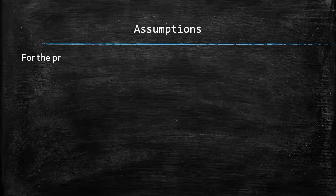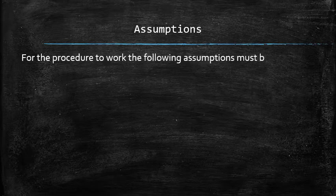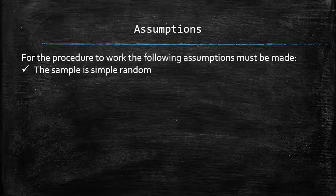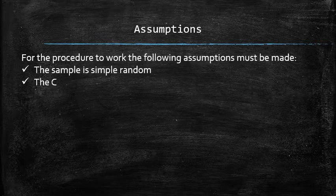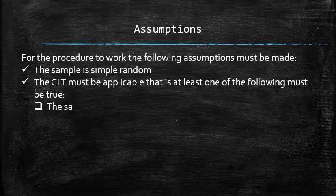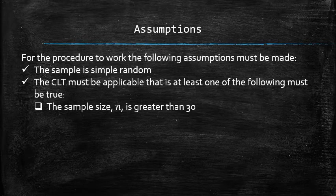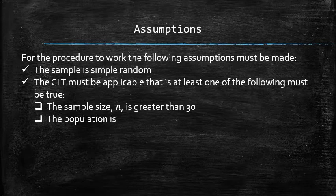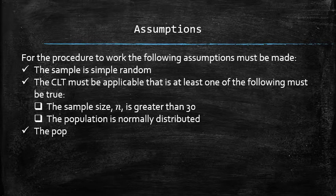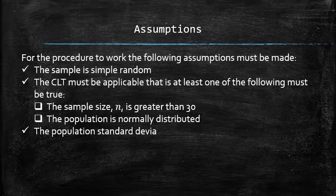For the procedure to work, the following assumptions must be made. The sample is simple random. And the central limit theorem must be applicable. That is, at least one of the following must be true: either the sample size n is greater than 30 or the population is normally distributed. Also, the population standard deviation sigma is unknown.